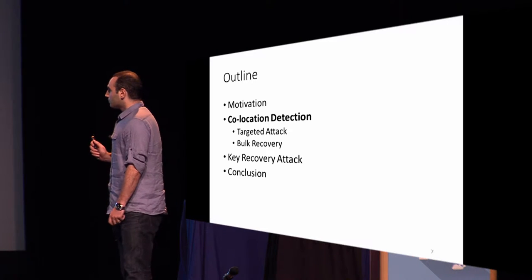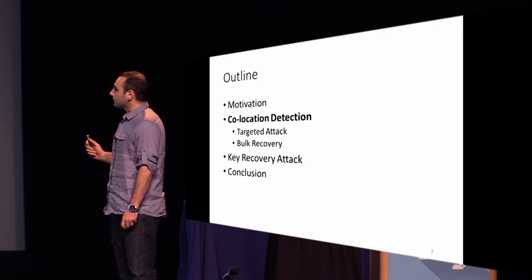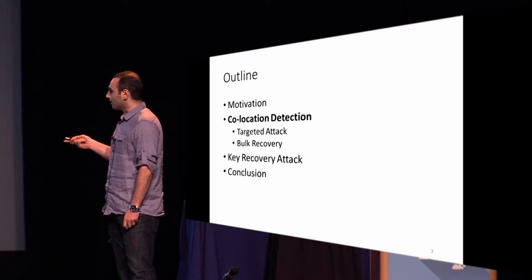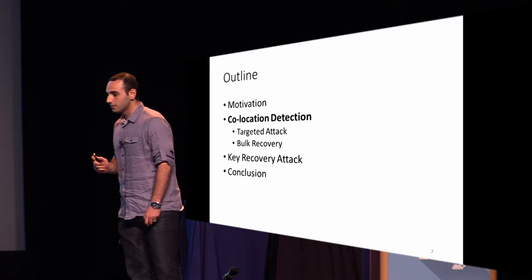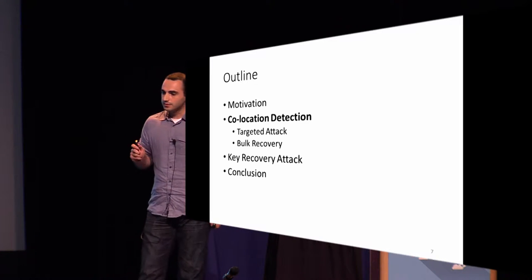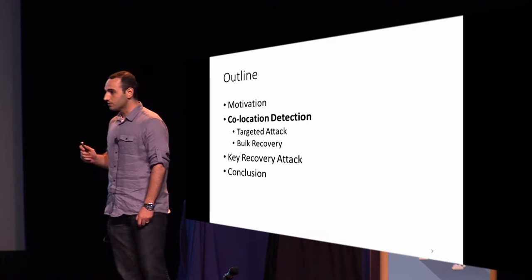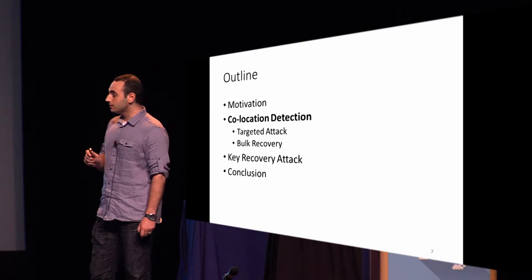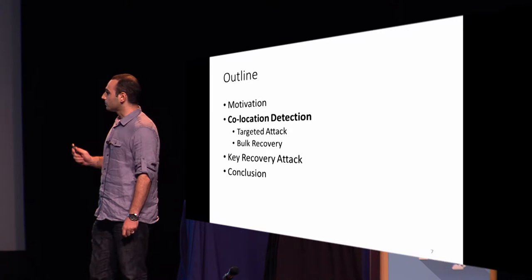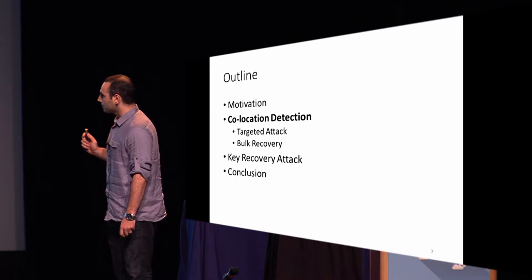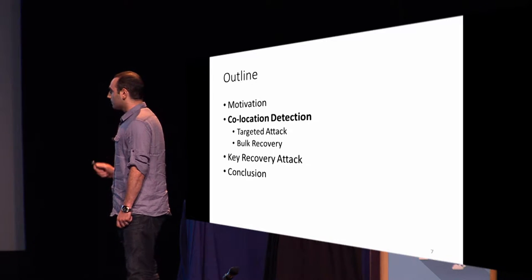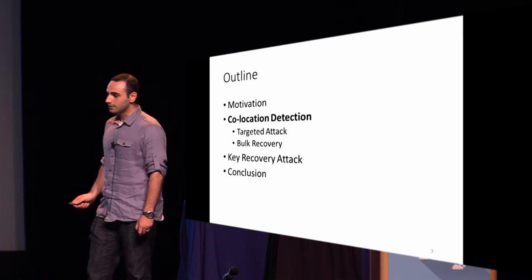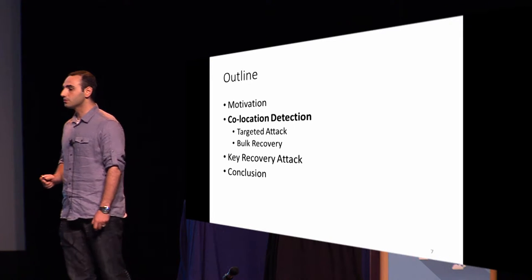Before going into co-location detection details, I'd like to distinguish between the targeted attack and bulk key recovery. In the targeted attack, the attacker goes after one specific target and therefore must ensure he is in fact co-located with that target. But in the bulk key recovery scenario, the attacker simply spins up multiple instances on the cloud and does not care who he is co-located with.